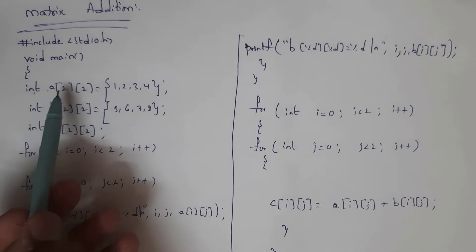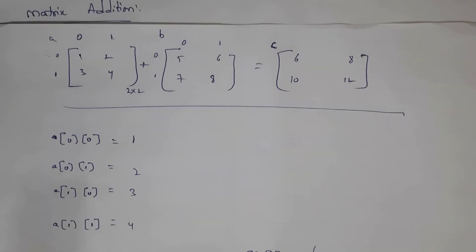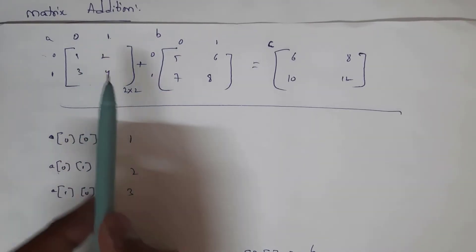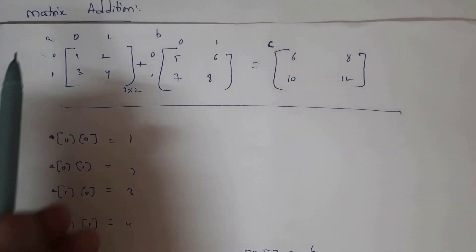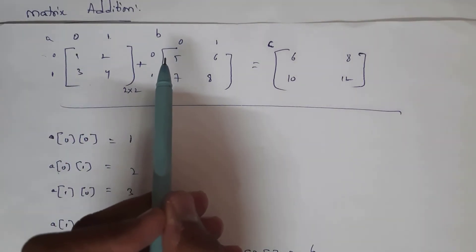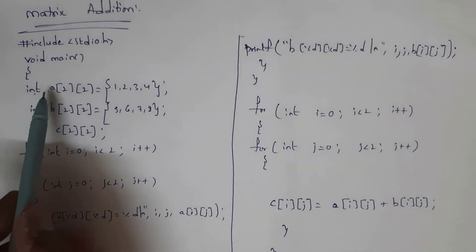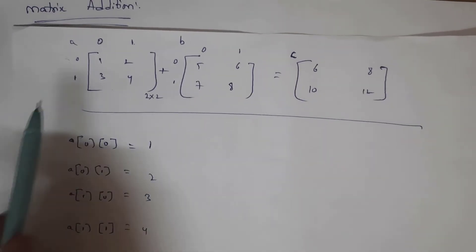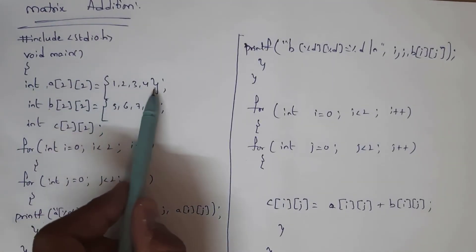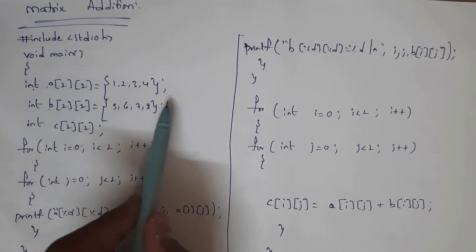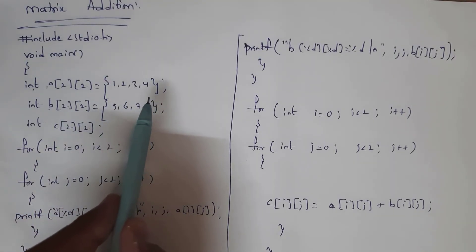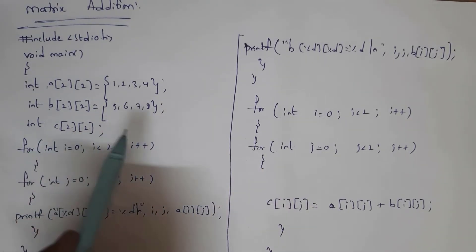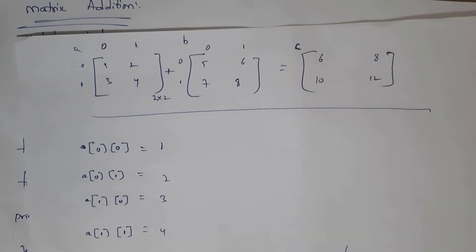Next, the C program for addition of two matrices. Let two matrices be matrix A and matrix B, both 2x2 matrices containing two rows and two columns. I want to add matrix A and matrix B and store the result in matrix C. Matrix A contains elements one, two, three, four and matrix B contains elements five, six, seven, eight.